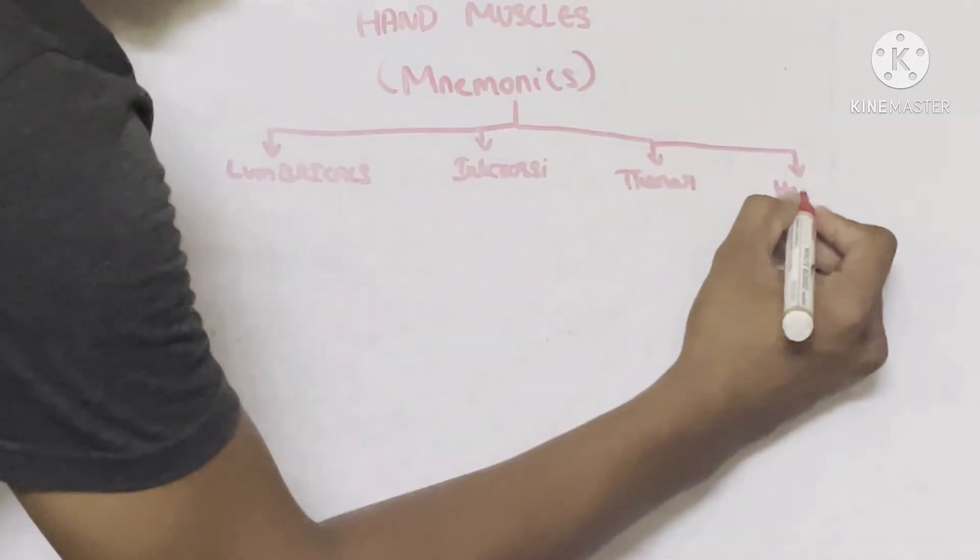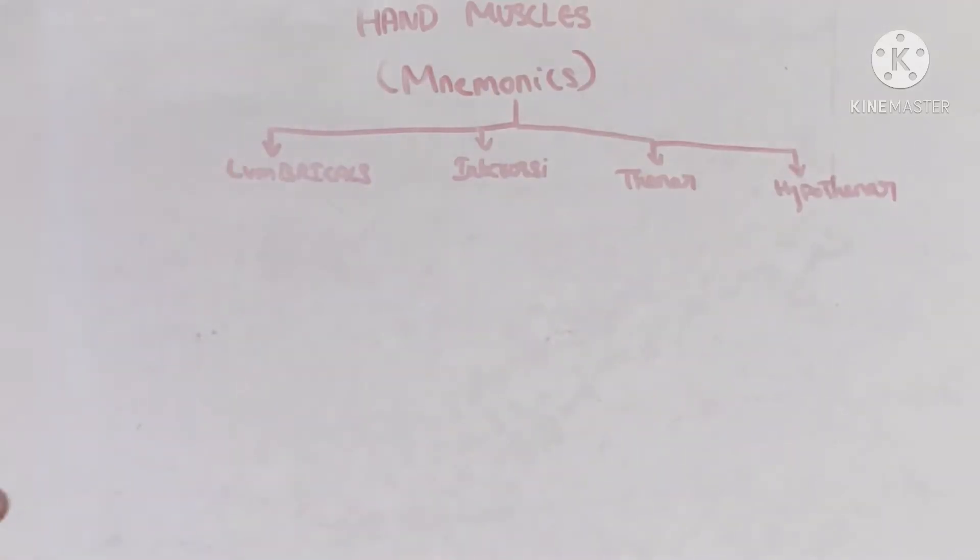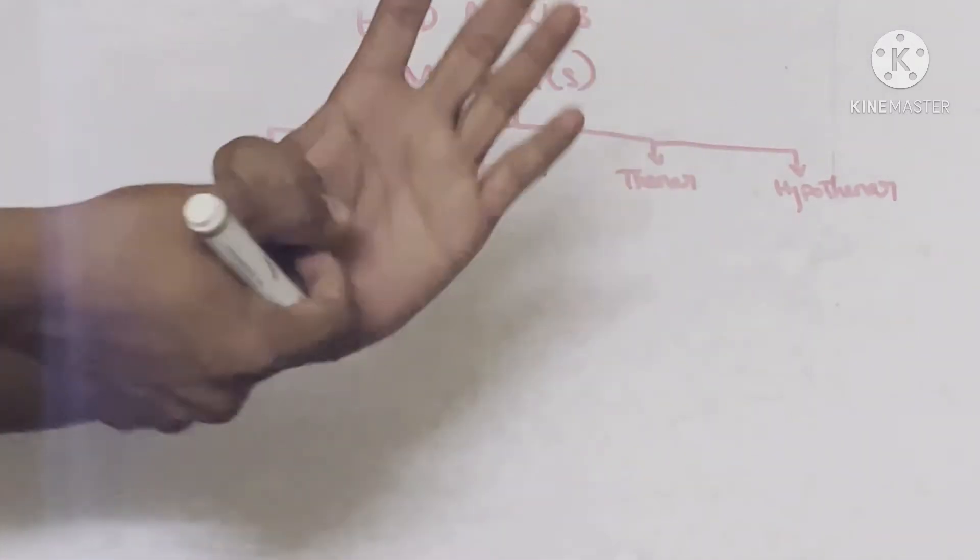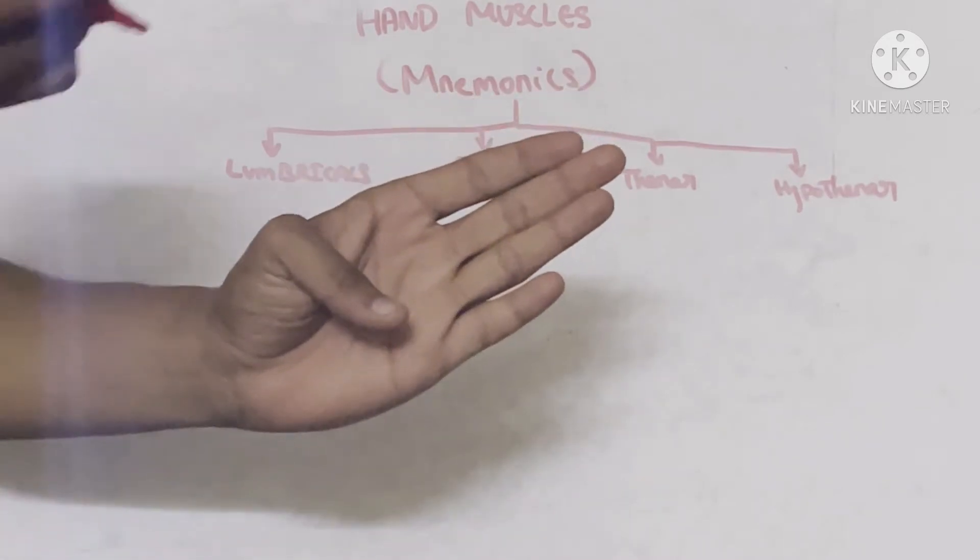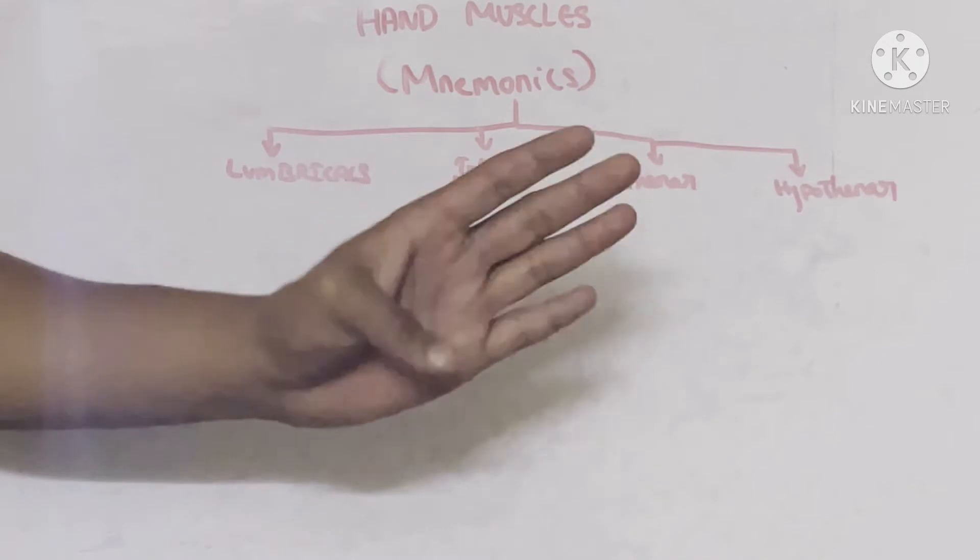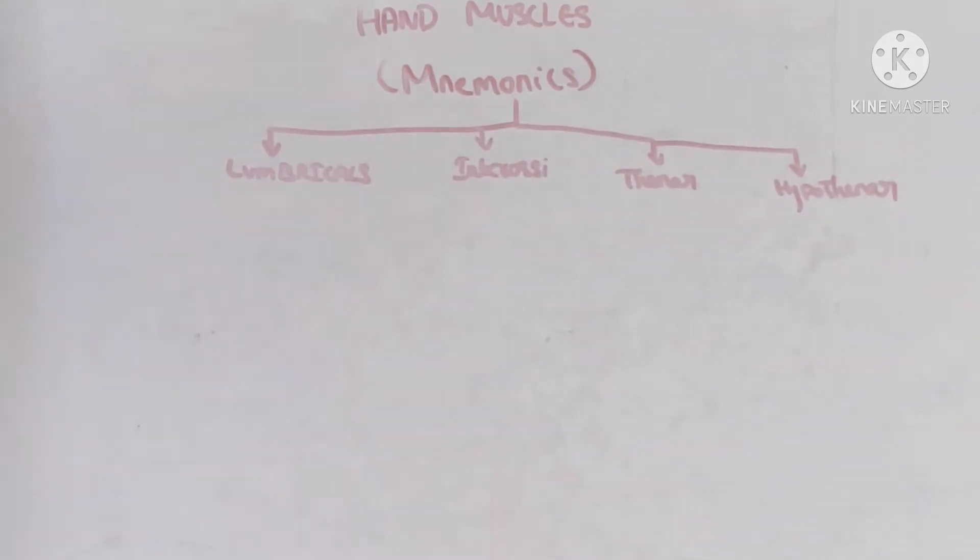If you take lumbricals, lumbricals are the muscles associated with fingers excluding the thumb—all the remaining fingers like middle finger, ring finger, index finger, small finger. All these fingers are associated with muscles called lumbrical muscles, so it has almost four muscles.